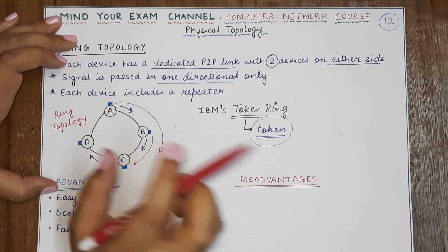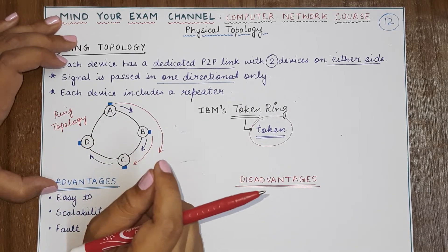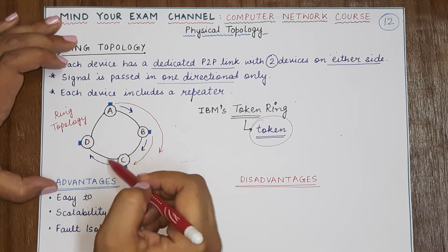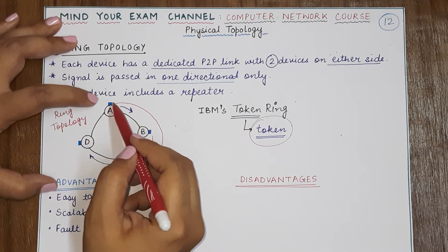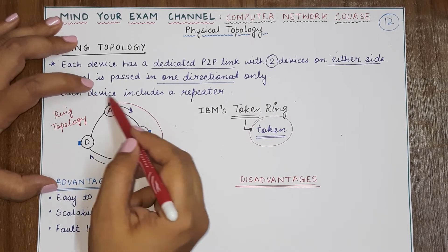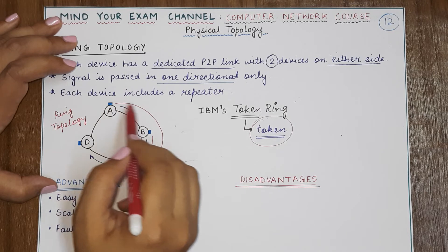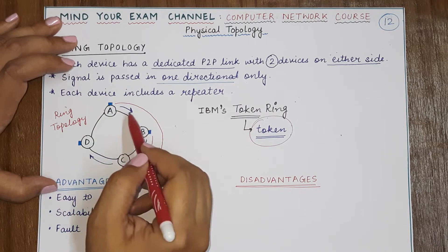Every device in the ring topology gets a token. You can assume a token is like a physical coin that every team member standing in the ring will get once, and if he has to say something he will use his token. Otherwise, he will forward the token to the next person.